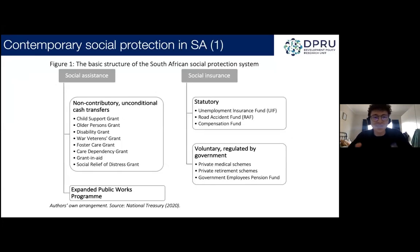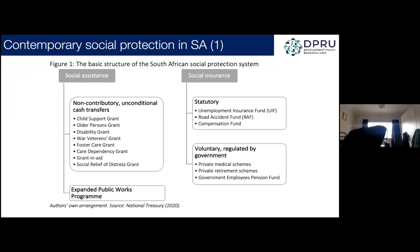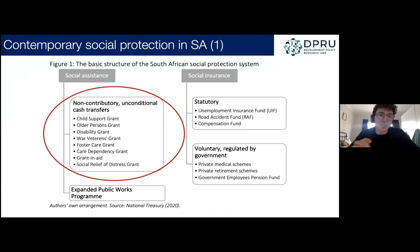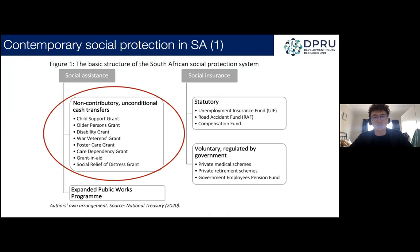Now that the caveats are discussed, we can move on to the actual paper. This figure shows a basic structure of the South African social protection system, which we can divide into social assistance and social insurance. This paper will focus on the pandemic-induced expansion of social assistance, namely social grants. We won't be touching on social insurance like changes to the UIF system, private or public medical aid schemes, or public works programs.